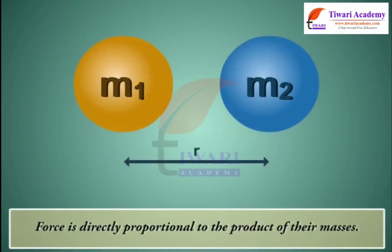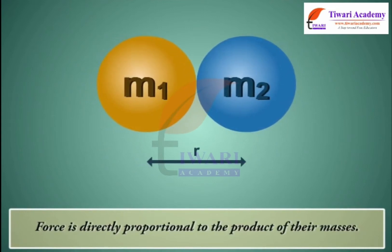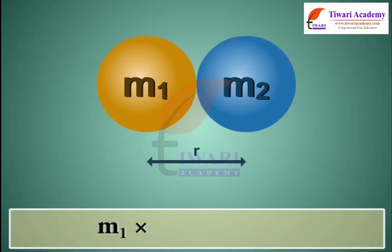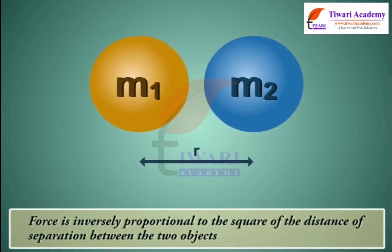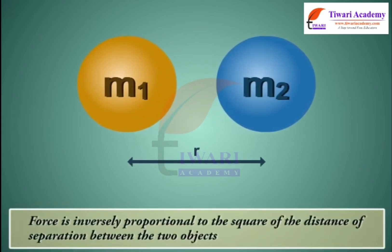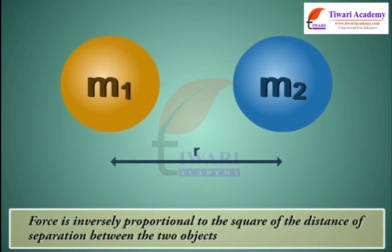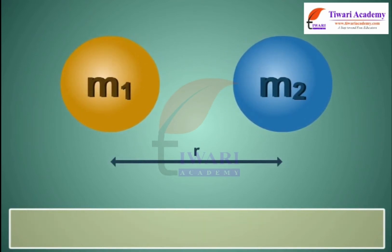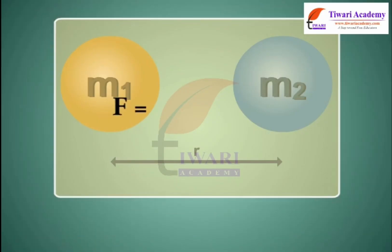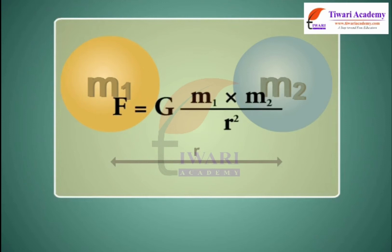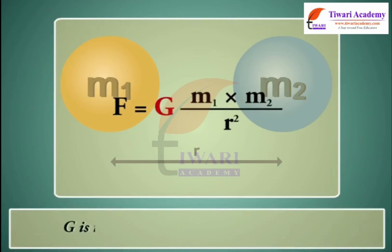Force is directly proportional to the product of their masses. Force is directly proportional to 1 upon R square. Combining these two, force is equal to G into M1 into M2 upon R square, where G is the universal gravitational constant.